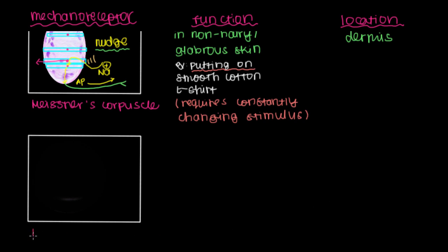The next mechanoreceptor is called Pacinian's corpuscle. Pacinian's, and this is another corpuscle, another body we're going to talk about right here.